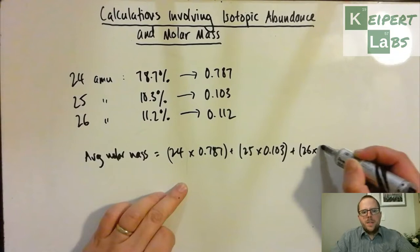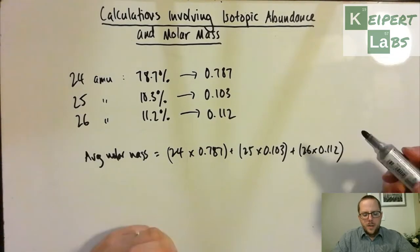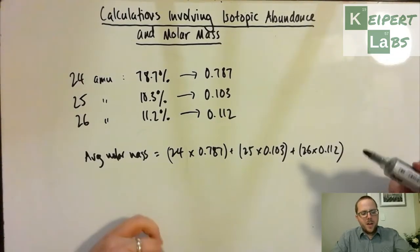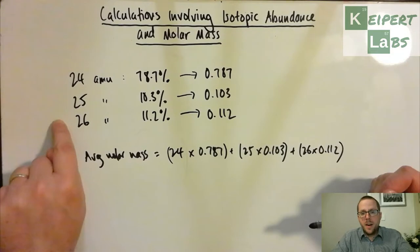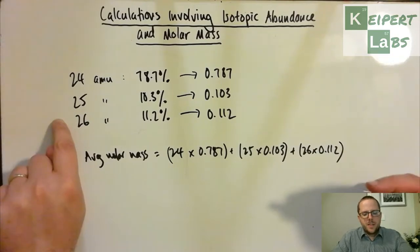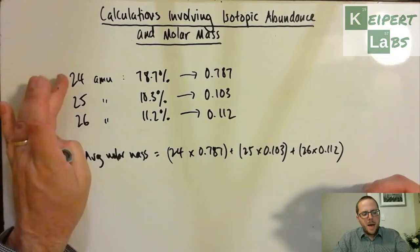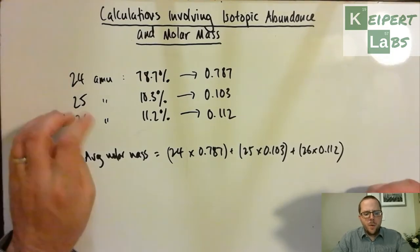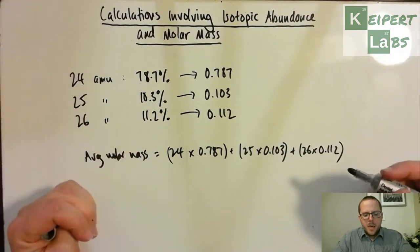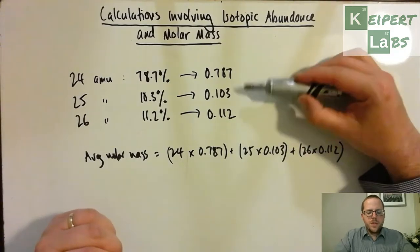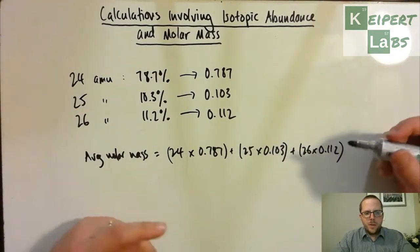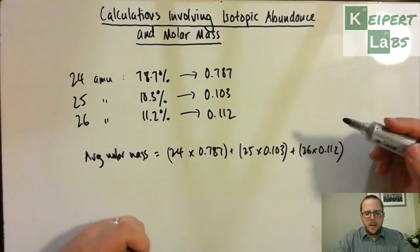Now you may well be wondering at this stage why you can't, to work out the average atomic mass, that you can't just do 24 plus 25 plus 26 and divide it by 3, because that's normally how we work out an average. But the reason that we don't do that is that that approach assumes that each mass comes in an equal frequency, that you've got like one of each or the same amount of each. But the reality is that because we have a different amount of each thing, you can't just work out the calculation that way.